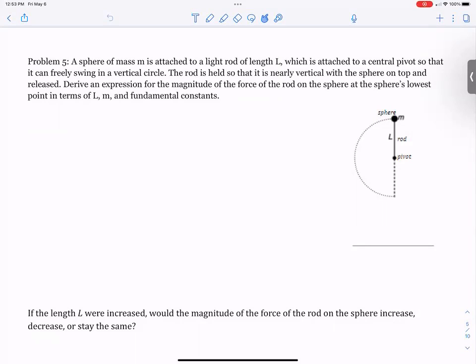Let's begin by looking at the example picture and reading the prompt. It says that a sphere of mass M is attached to a light rod of length L, which is attached to a central pivot so that it can freely swing in a vertical circle. The rod is held so that it is nearly vertical with the sphere on top and released. Derive an expression for the magnitude of the force of the rod on the sphere at the sphere's lowest point in terms of L, M, and fundamental constants.